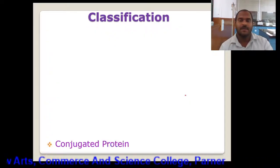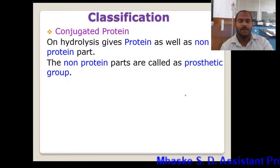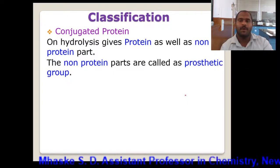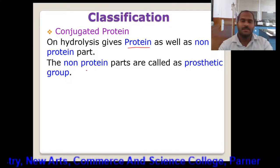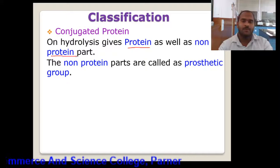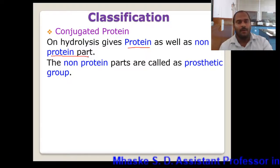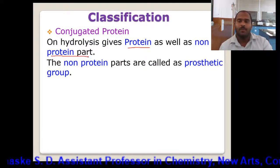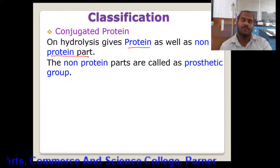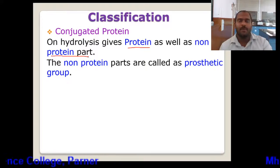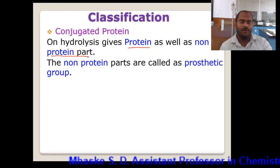Now let's consider the next class of protein on the basis of size, that is conjugated protein. In conjugated protein, there is the presence of a protein part as well as a non-protein part. So on hydrolysis it yields protein as well as a non-protein part. The proteins which on hydrolysis yield protein as well as a non-protein part are called conjugated proteins. The non-protein part present in a conjugated protein is called the prosthetic group. So it is a combination of a polypeptide chain plus another molecule, which results in the formation of a conjugated protein.